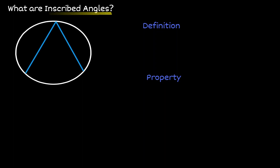Let's call the left chord AB, and let's call the chord on the right BC. Notice that those two chords intersect at point B, which is located in the circumference of the circle. When we have this situation, notice there's an angle that gets created here.